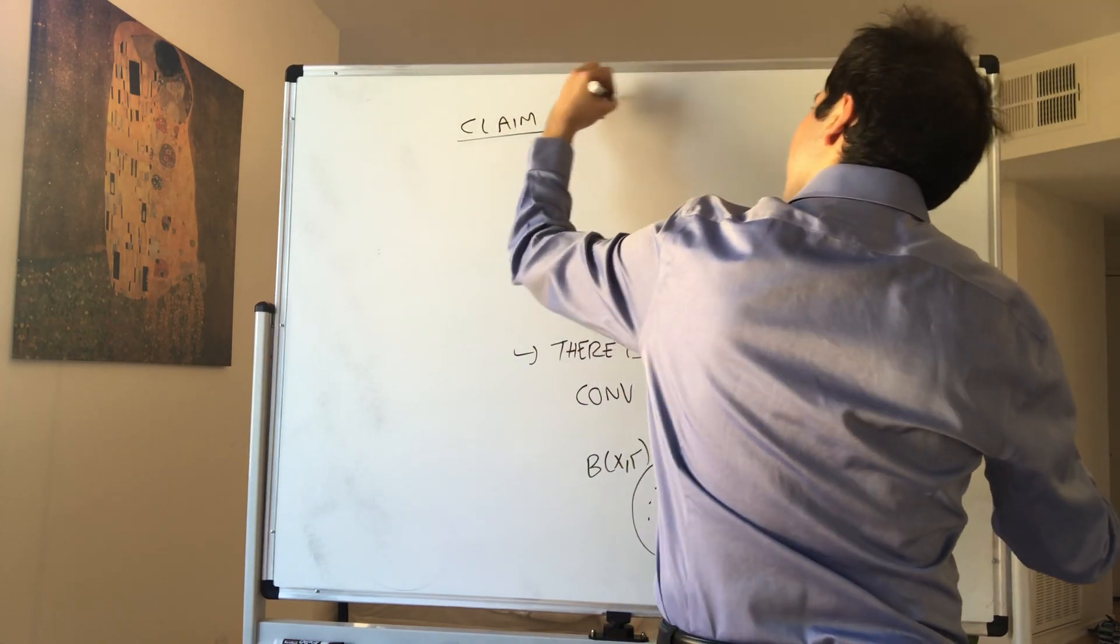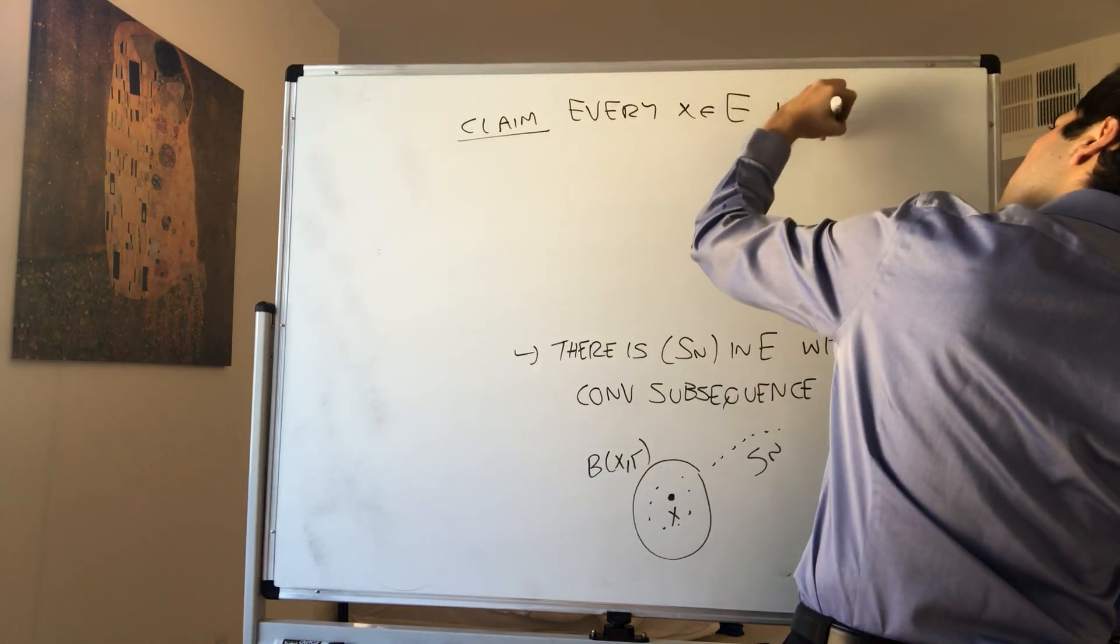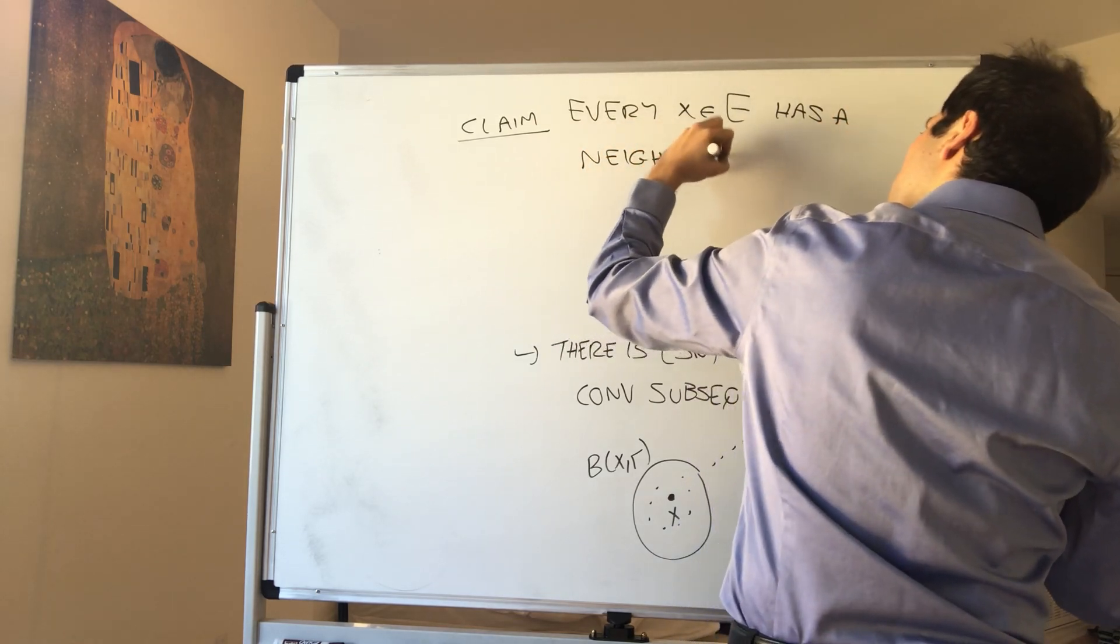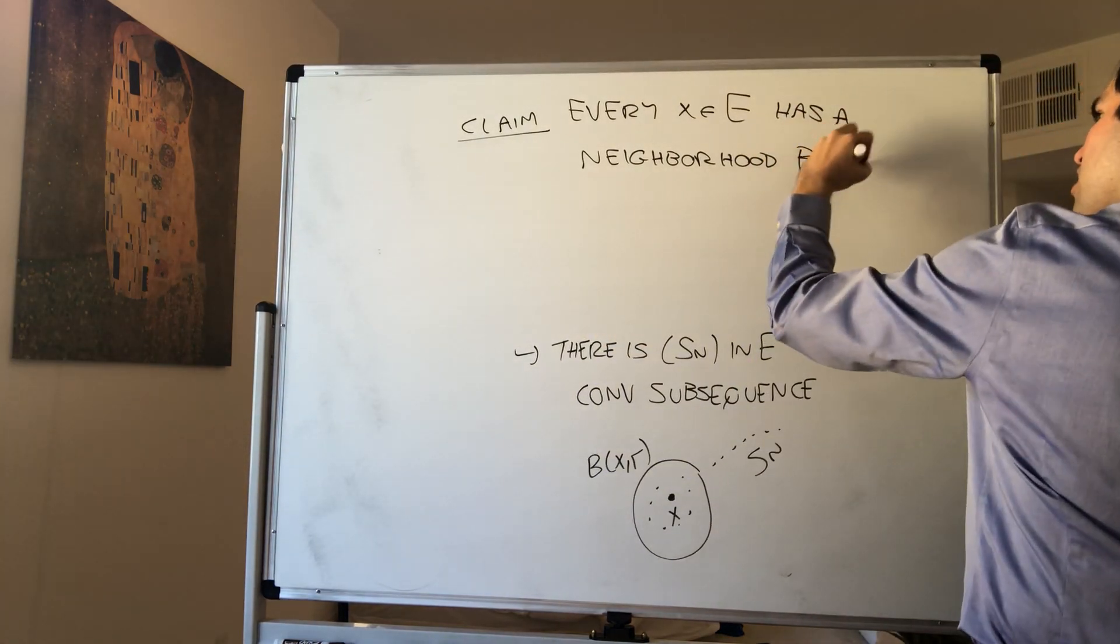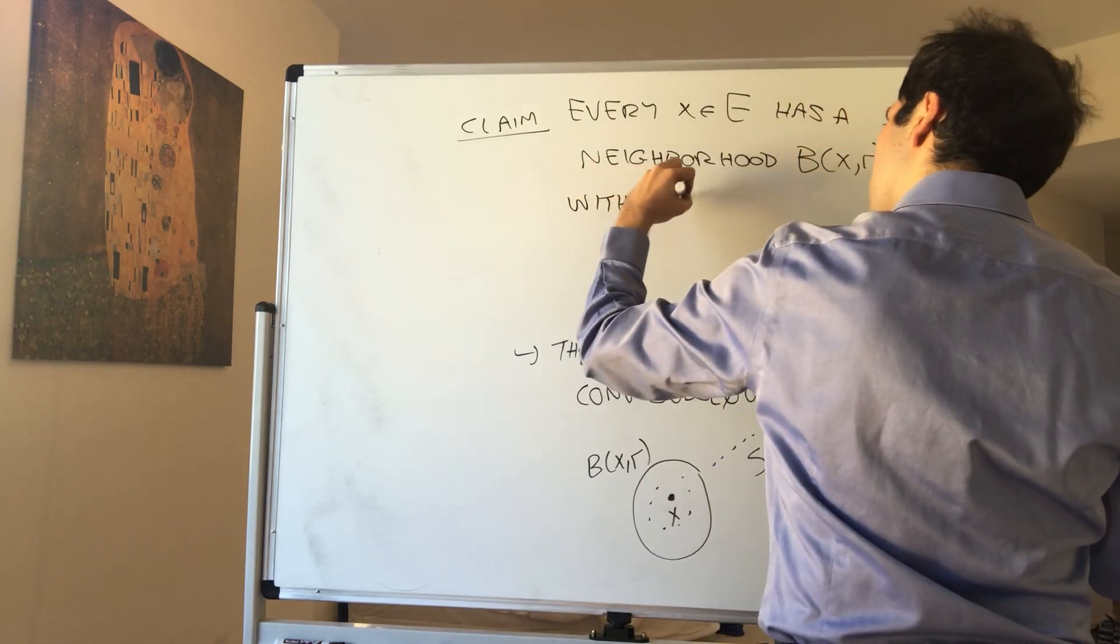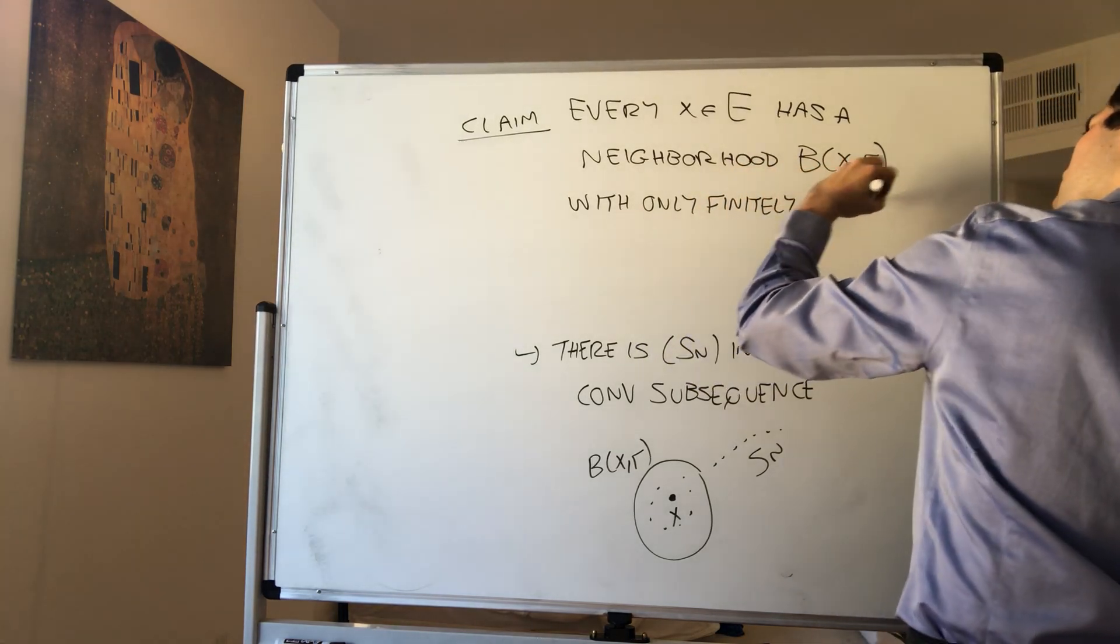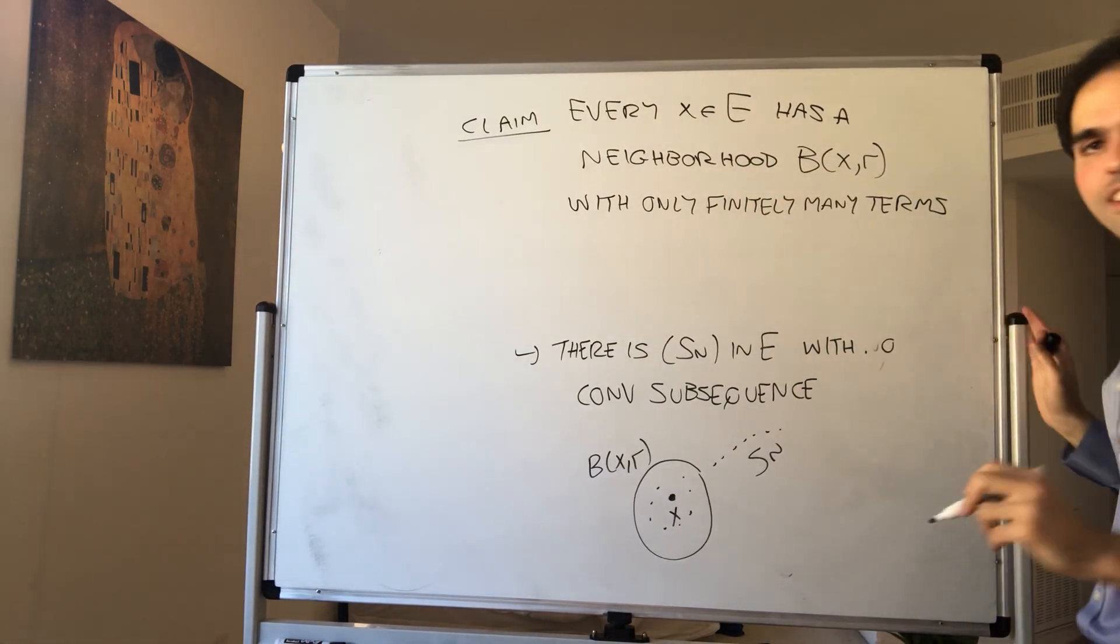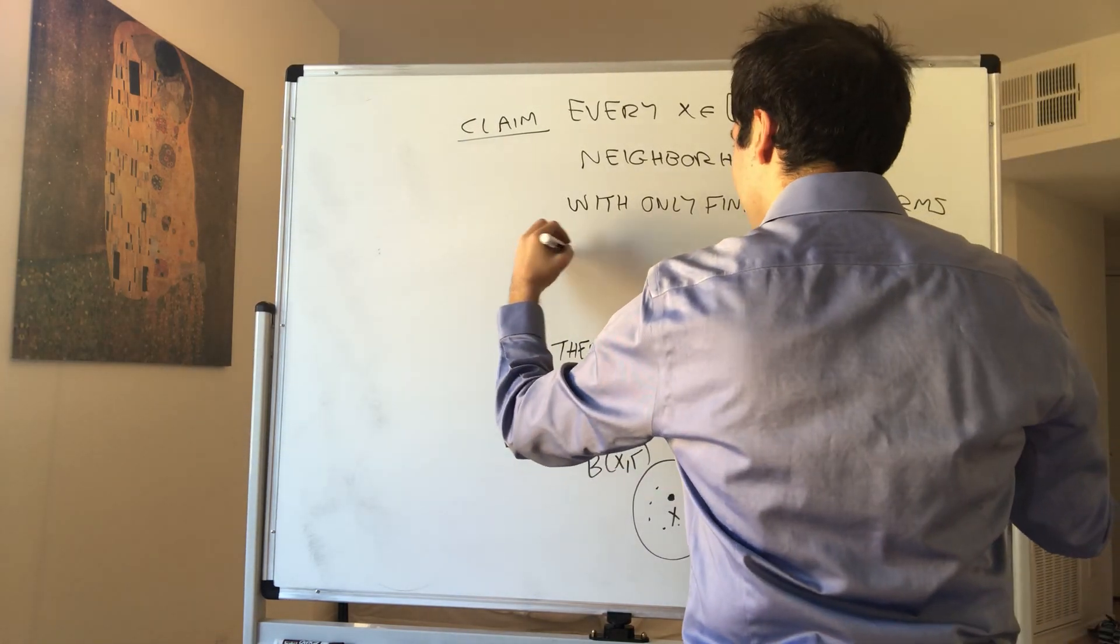So, every X in E has a neighborhood, or you know, has some open ball B(X,R) with only finitely many terms. If neighborhood confuses, you just think ball. So, B(X,R) with only finitely many terms of Sn.